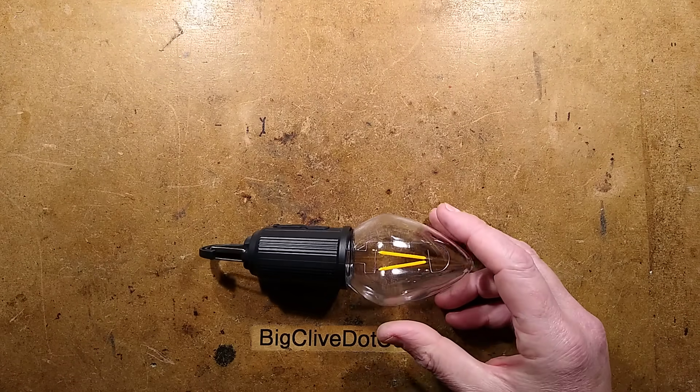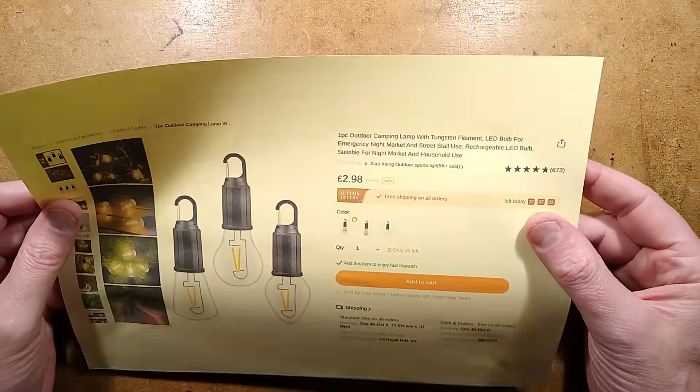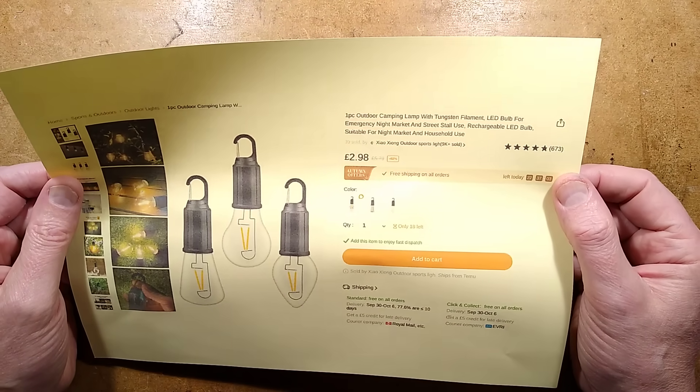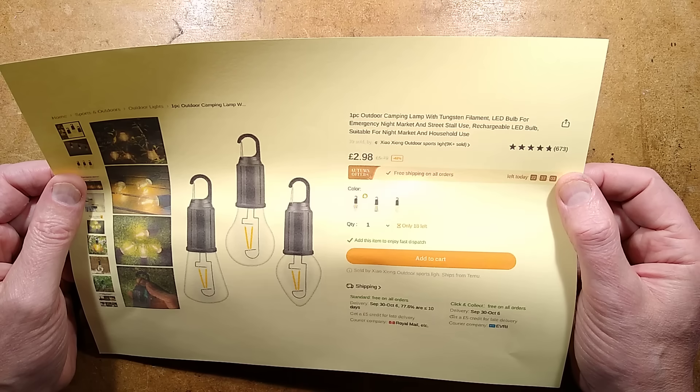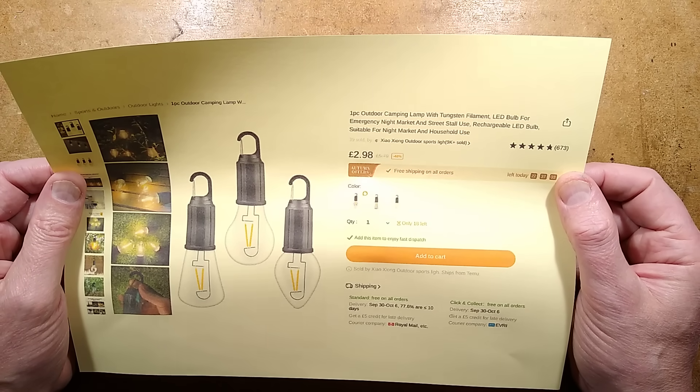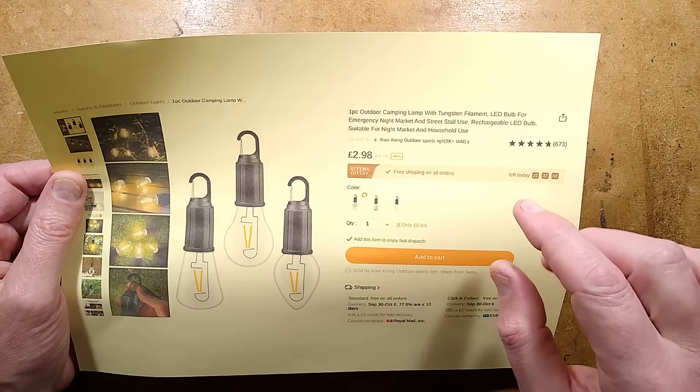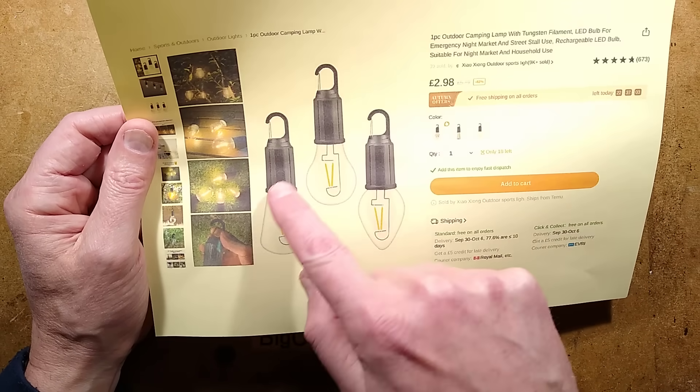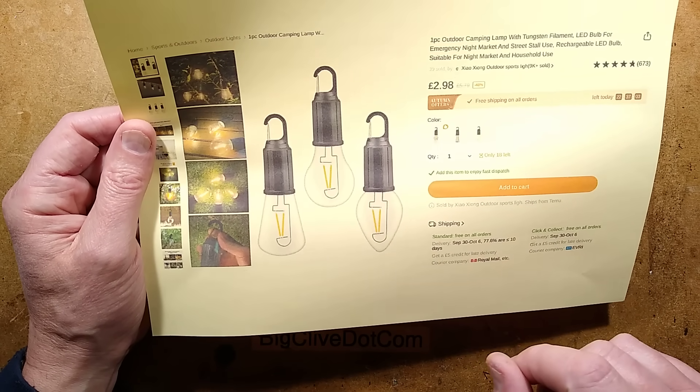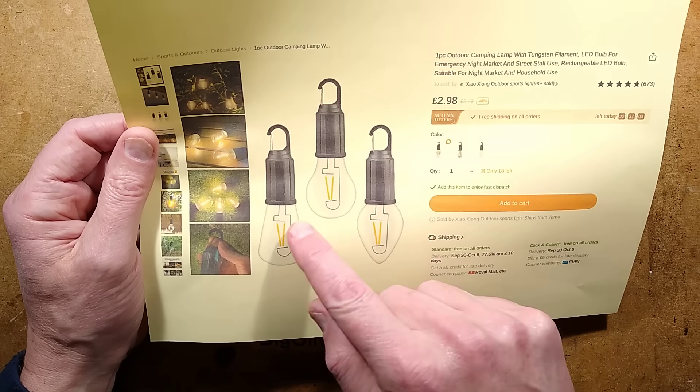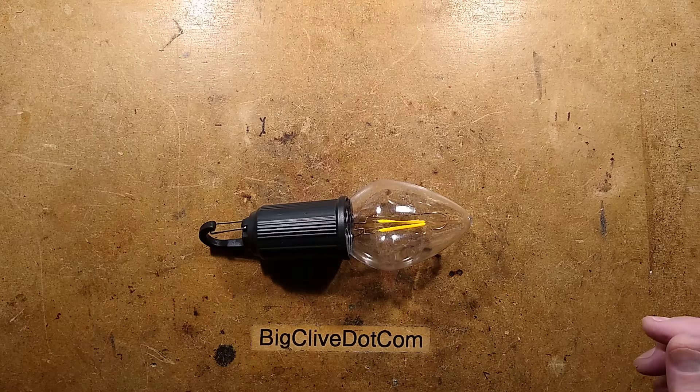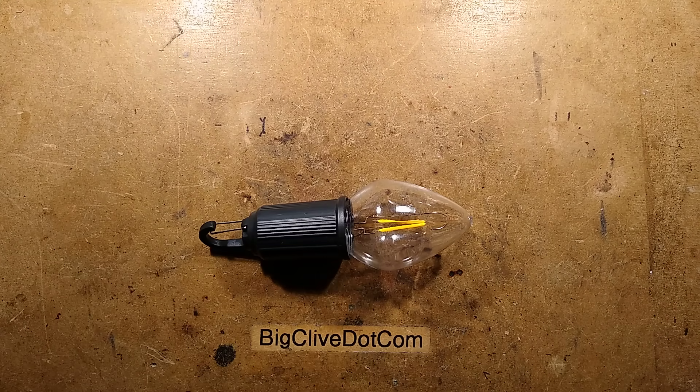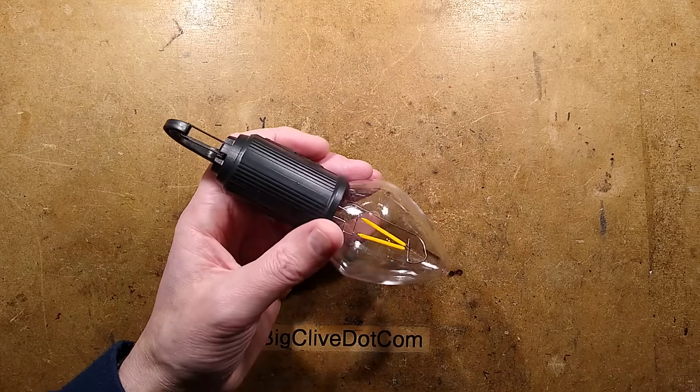This one is described as one piece outdoor camping lamp with tungsten filament LED bulb for emergency night market and street stall use. The key things here are camping lamp with tungsten filament, available in three different shapes, and it is rechargeable. The price varies according to the shape and includes shipping, but there is a bit of a thing about abusing the shipping system.